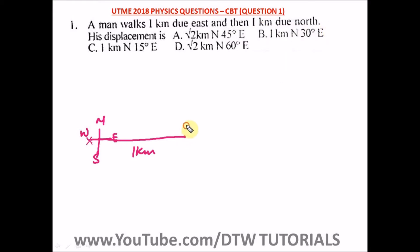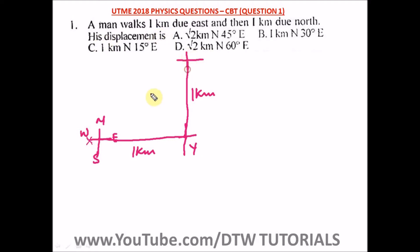Then one kilometer due north. Let's say he stops here — that's one kilometer. Let's draw the cardinal point again, and then one kilometer due north. Let's call this point Y. We go north now, one kilometer due north. The question says to find his displacement. So we draw another cardinal point — his displacement is from X to Z. We have to find this displacement.